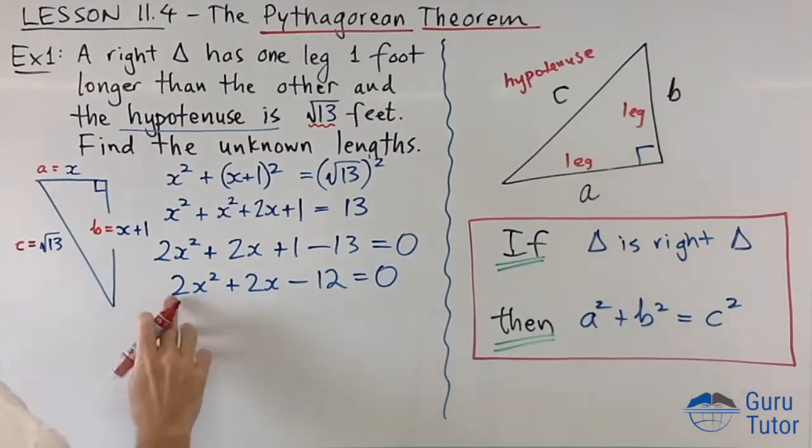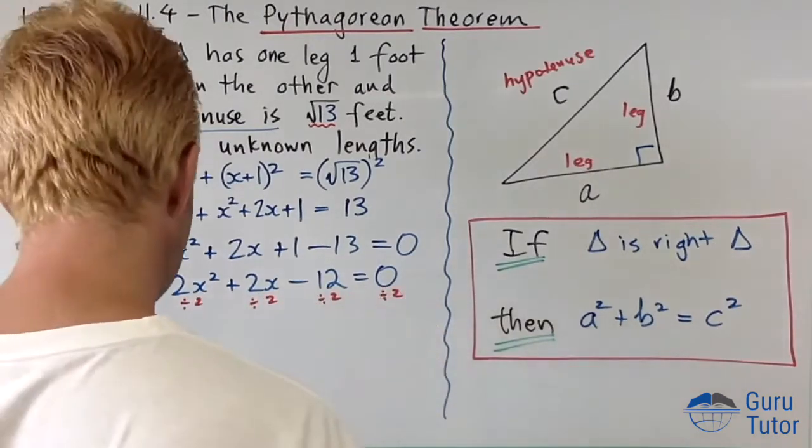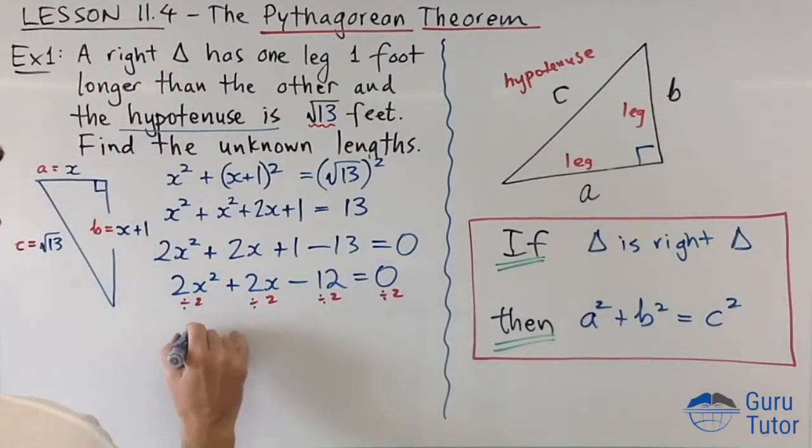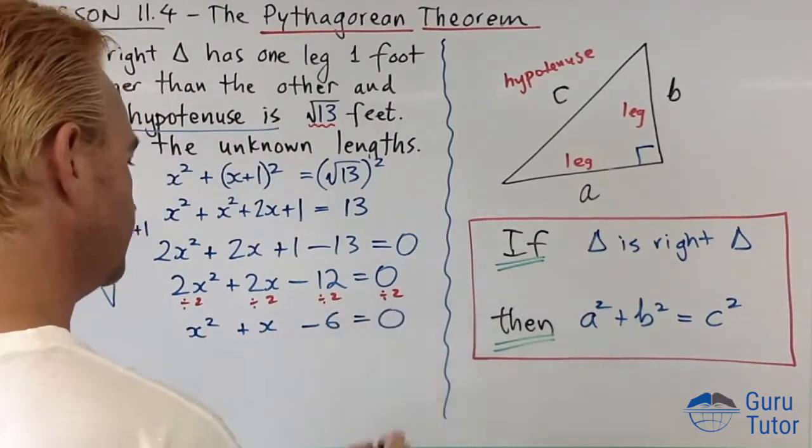What can we do now? We've got our even numbers in the coefficients here, so let's just divide everything by 2, and we end up with x squared plus x minus 6 equals 0.